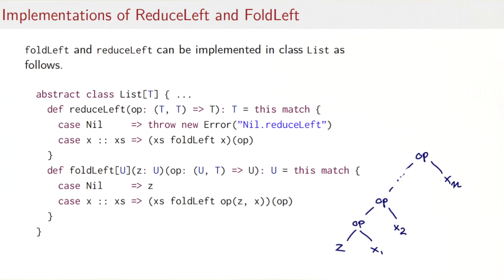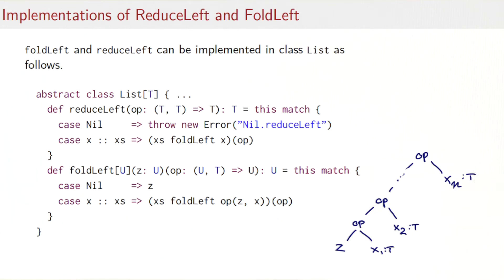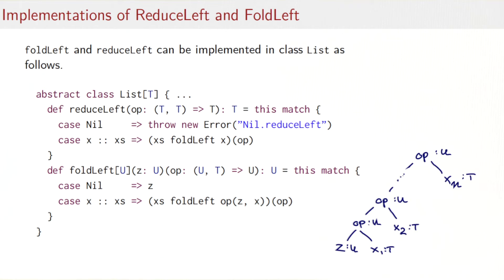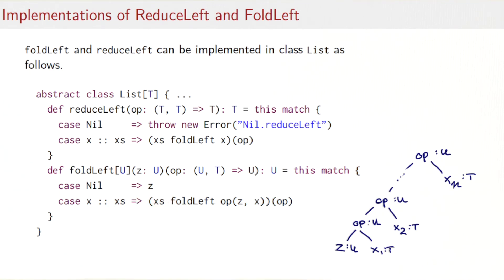Now let's look at the type of foldLeft. The list elements are all of type T. The zero can be of a different type U. To make things work out, since each subtree becomes the next zero, all subtrees must have type U up to the result of foldLeft. So type U is arbitrary, zero has type U, the operation must have type taking a U and a T to a U, and the result of foldLeft is a U.